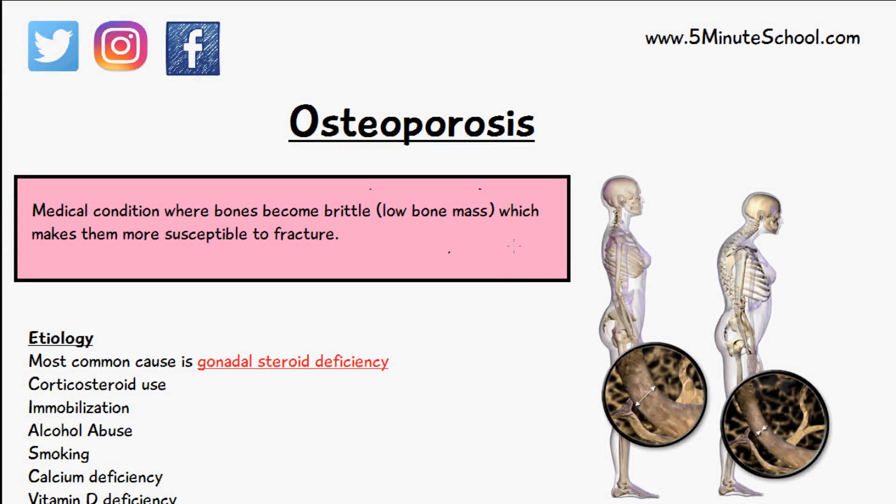Welcome to 5-Minute School and in today's video we're going to be talking about osteoporosis. Osteoporosis is a medical condition where the bones become brittle or they have a low bone mass, which makes them more susceptible to fracture.